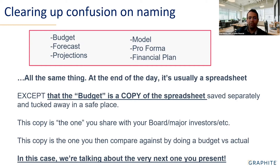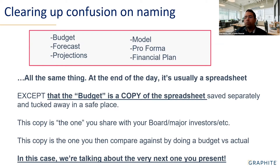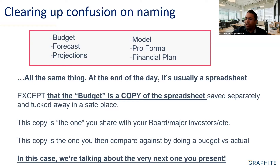The only difference is your budget is the one you said you're going to hit and maybe showed your investors or board — save that as a copy, label it clearly. That's the one you do a budget-versus-actual against. In a separate copy, you can be changing things all the time because things change. If things diverge enough from your original plan, you can present that as your new forecast. Things change in a startup — that's fine.